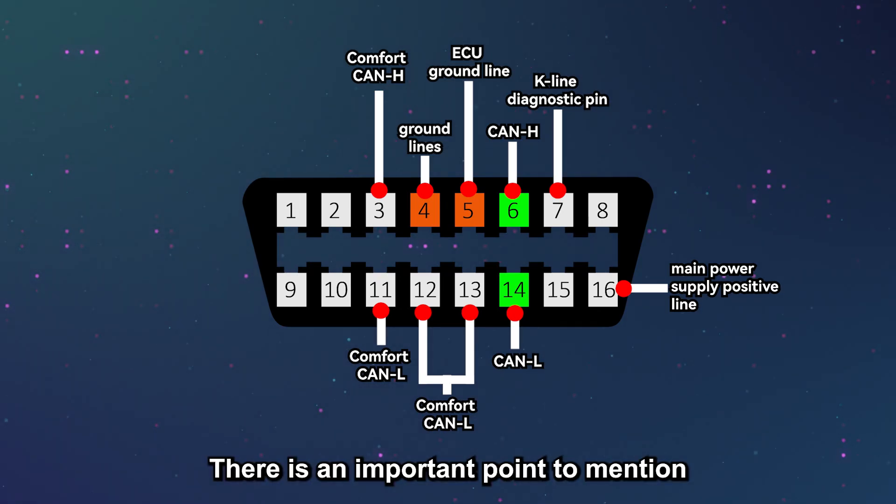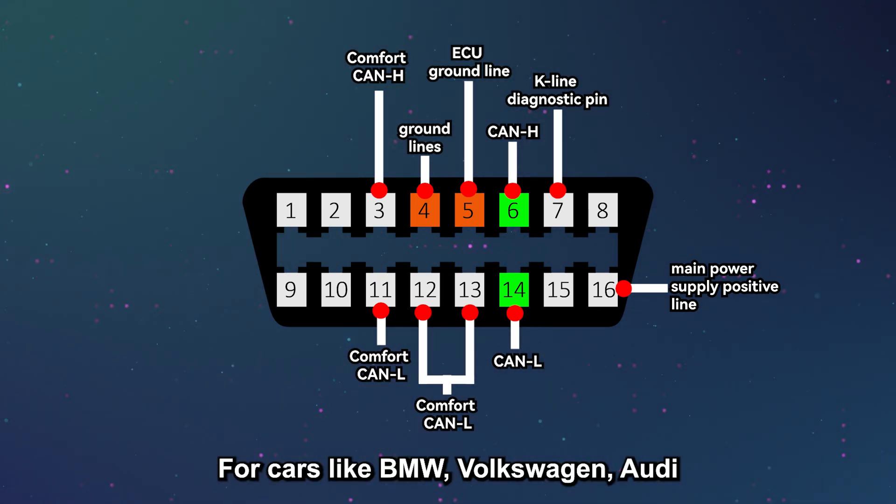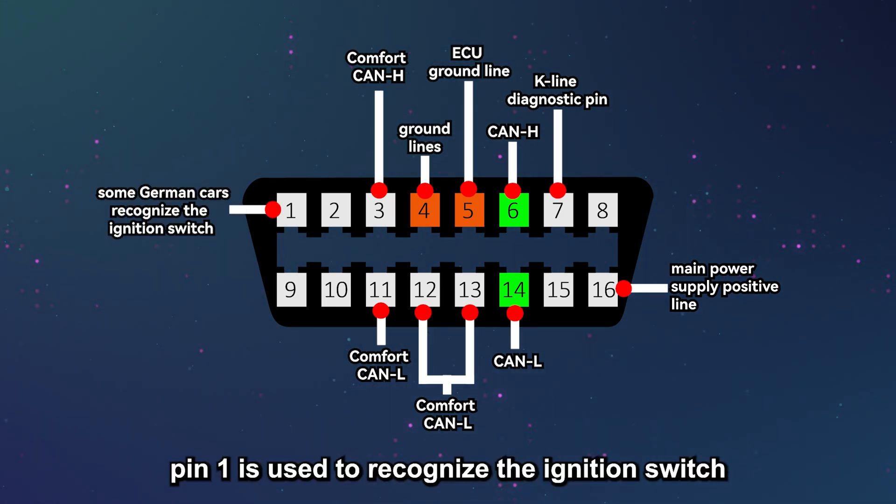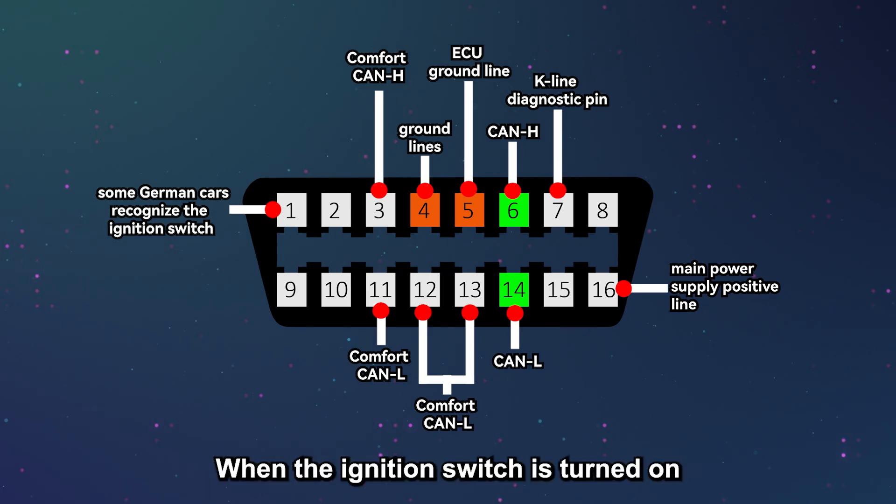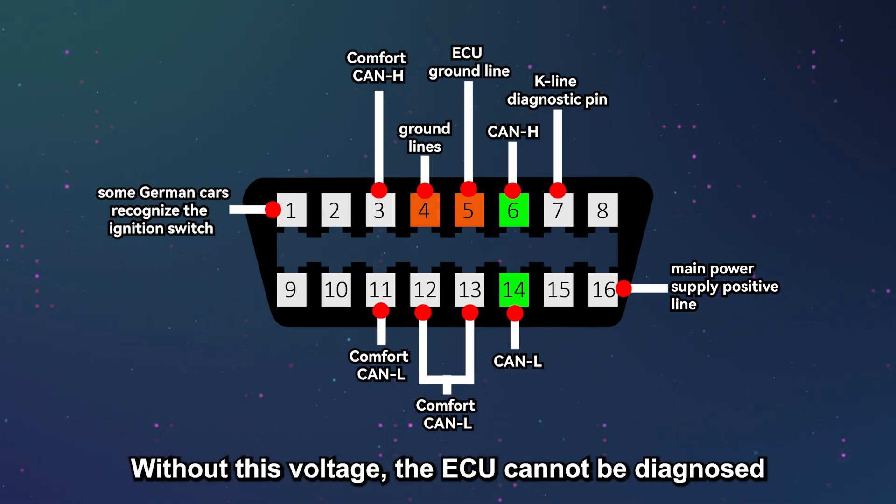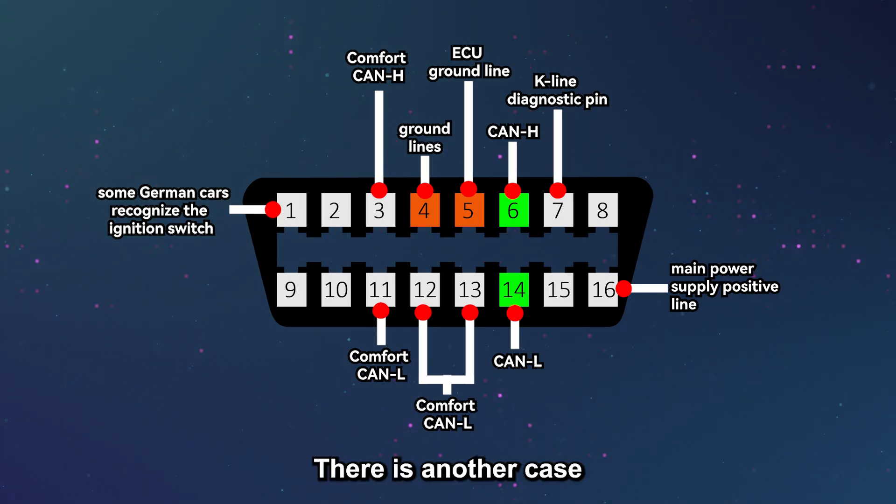There is an important point to mention. For cars like VW, Volkswagen, Audi, and some other German vehicles, pin 1 is used to recognize the ignition switch. When the ignition switch is turned on, it measures a voltage of 12 volts. Without this voltage, the ECU cannot be diagnosed.